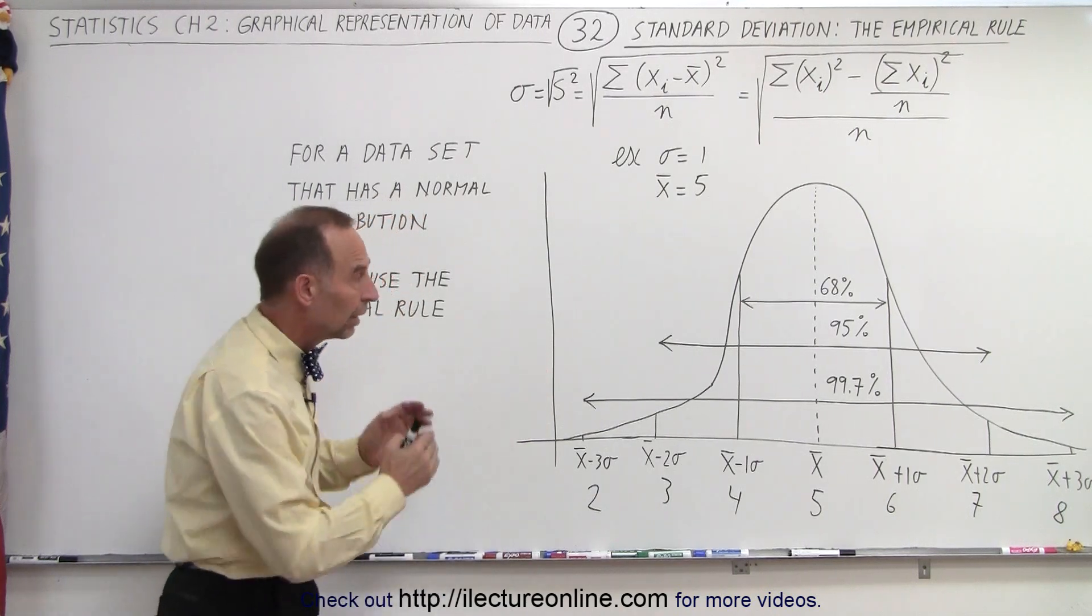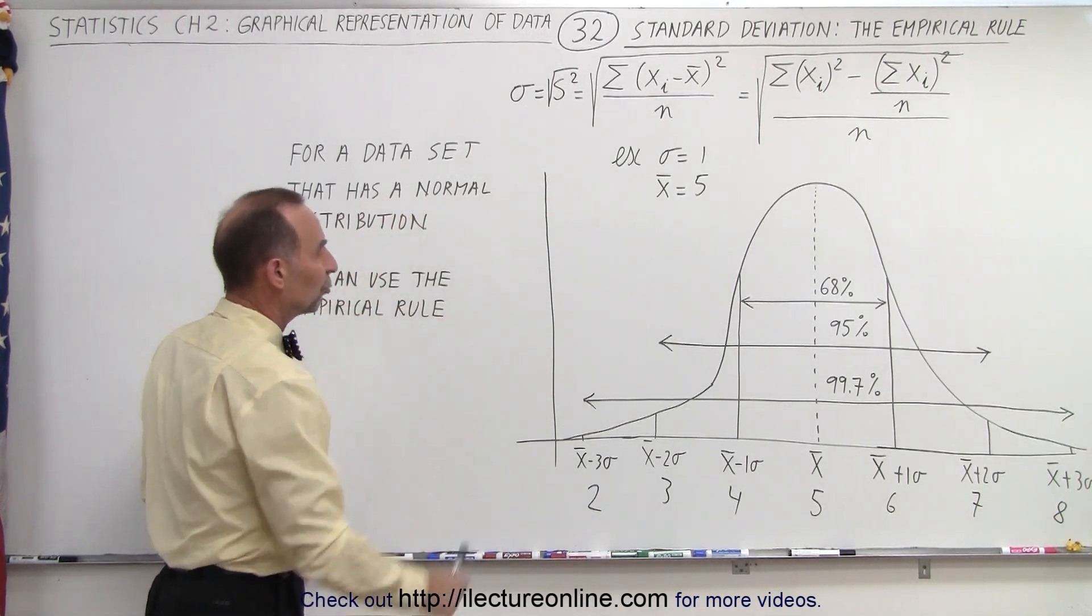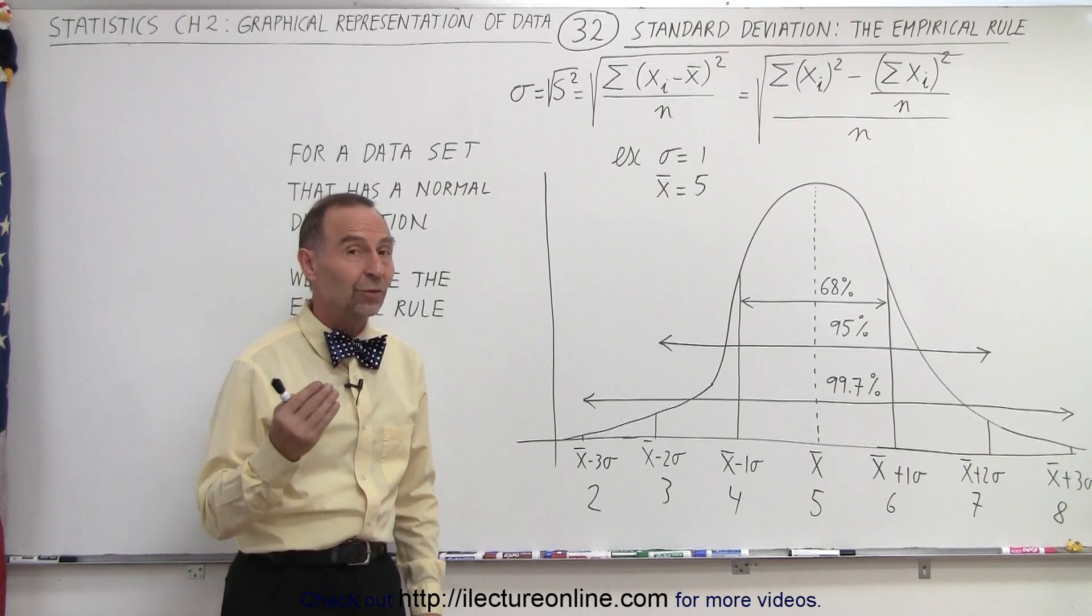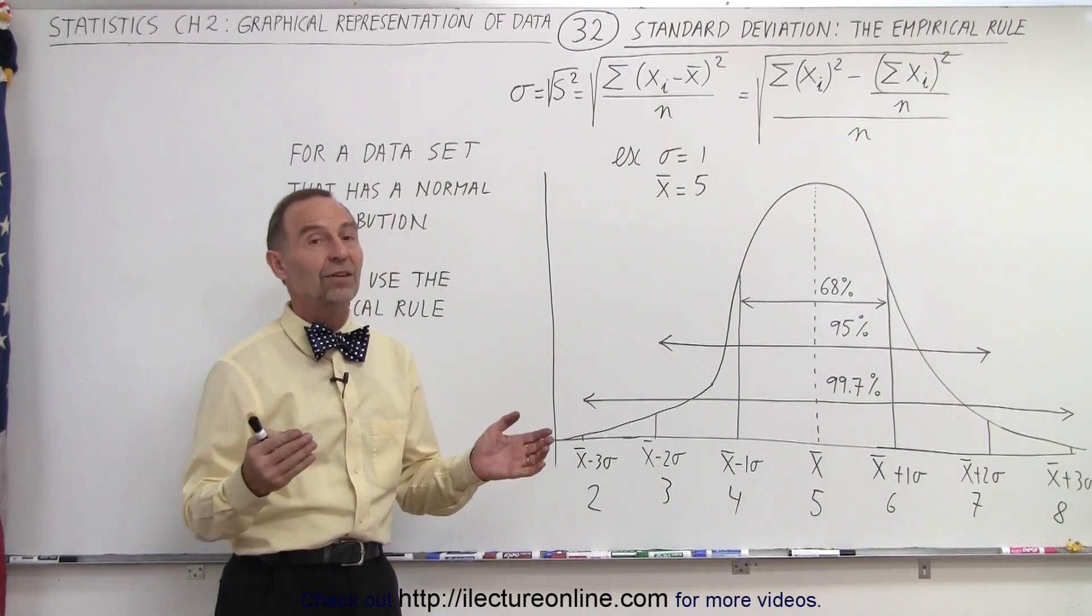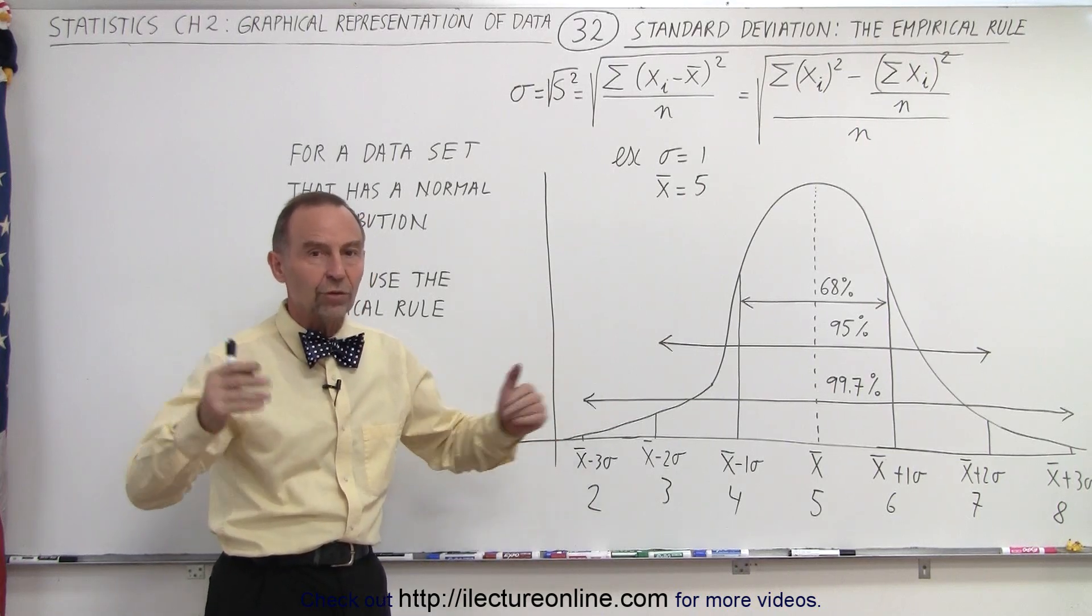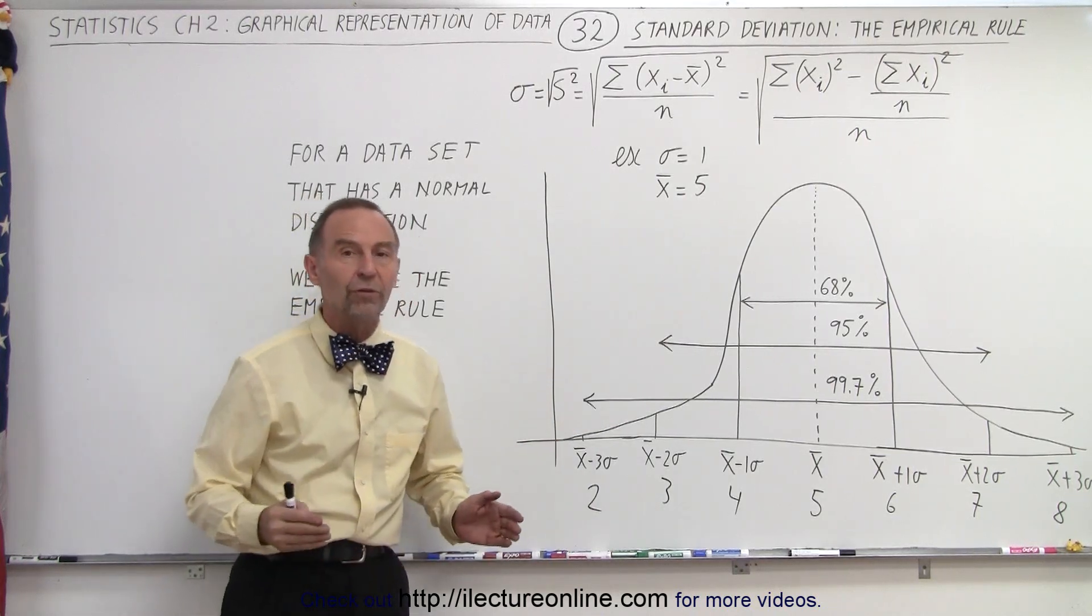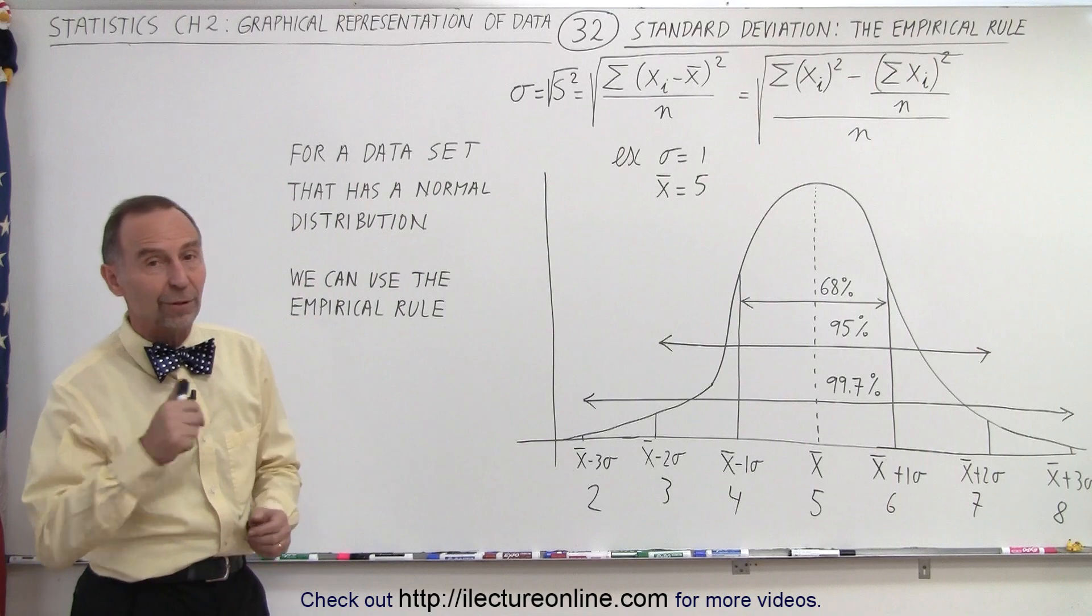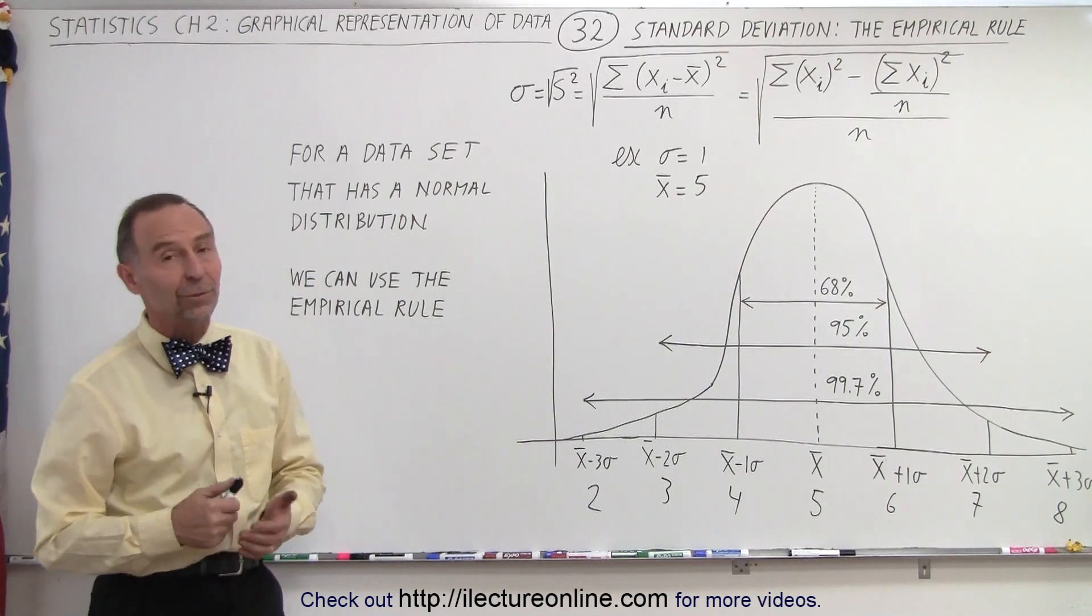And that's what we call the empirical rule if our data set has a normal distribution. And so once we calculate the mean and understand the deviation, then we pretty well know what values will fall within a certain range and what percent of our values will fall within a certain range away from the mean. And that is how it's done.